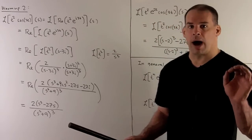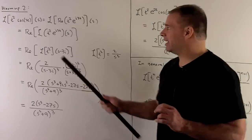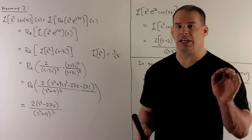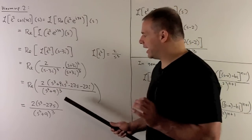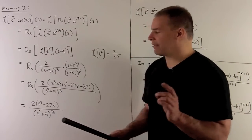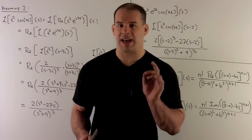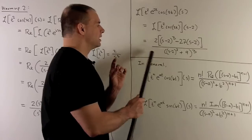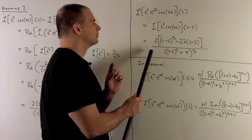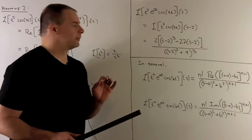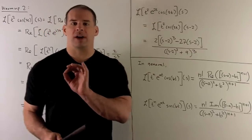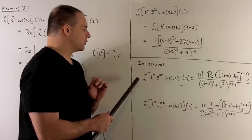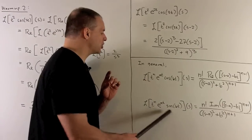To get to our original problem, we take the Laplace transform we just found and account for multiplication by e^(2t). All we do is take the expression for t²·cos(3t) and replace every s with s − 2. That expression is the answer to our problem. If you track through everything worked out, you get formulas for Laplace transforms of these types of expressions in general.